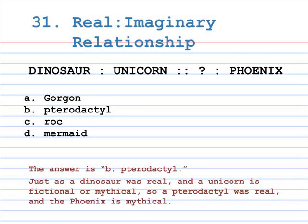Number 31: real is to imaginary relationship. Dinosaur is to unicorn as A. Gorgon, B. Pterodactyl, C. Rock, D. Mermaid is to phoenix. The correct answer is B, Pterodactyl. Just as a dinosaur was real and a unicorn is fictional or mythical, so a pterodactyl was real and the phoenix is mythical. The Roc, by the way, is a mythical bird of prey.